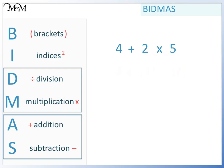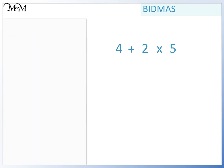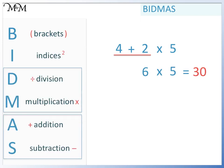Here's what would happen if we didn't use BIDMAS. 4 plus 2 equals 6. 6 times 5 equals 30. When we used BIDMAS, we had the answer 14.